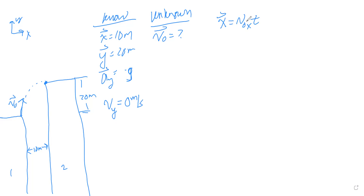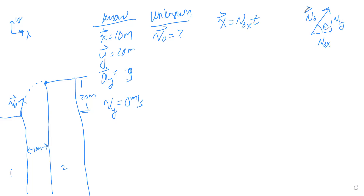In the horizontal direction, because acceleration in the x direction is zero, the displacement in x equals the initial velocity in x times time. We can write that initial x-velocity in terms of the unknown initial velocity, where the x component is the magnitude of the initial velocity times the cosine of theta. So we can rewrite this equation accordingly.